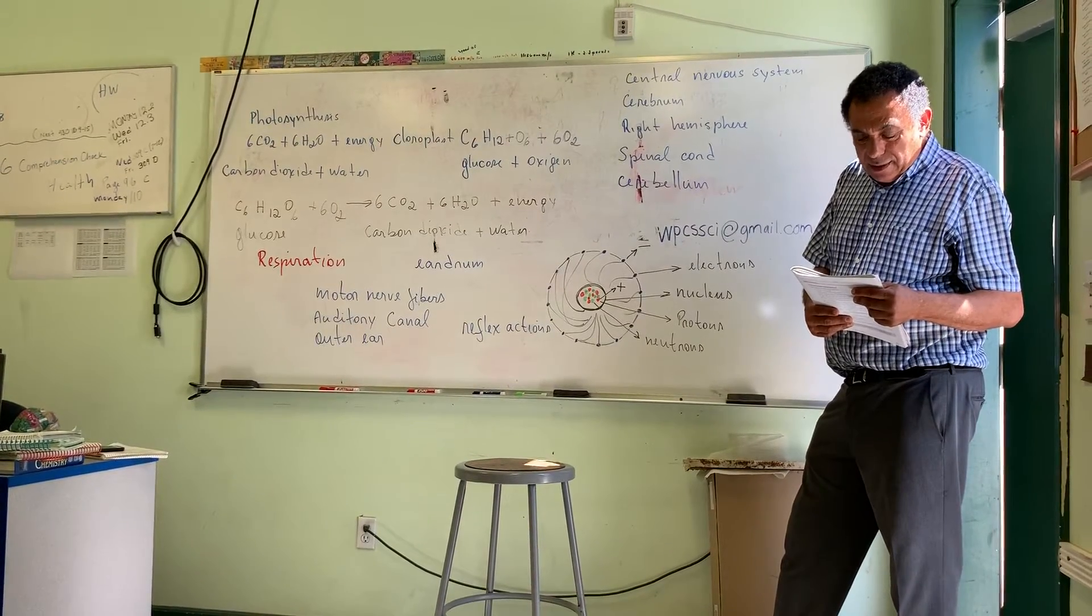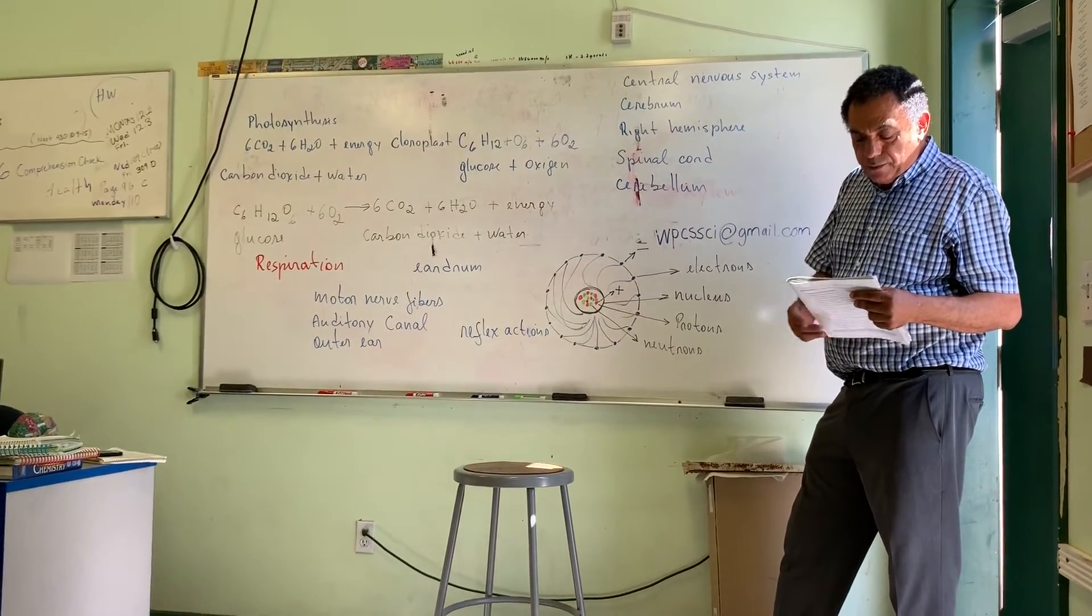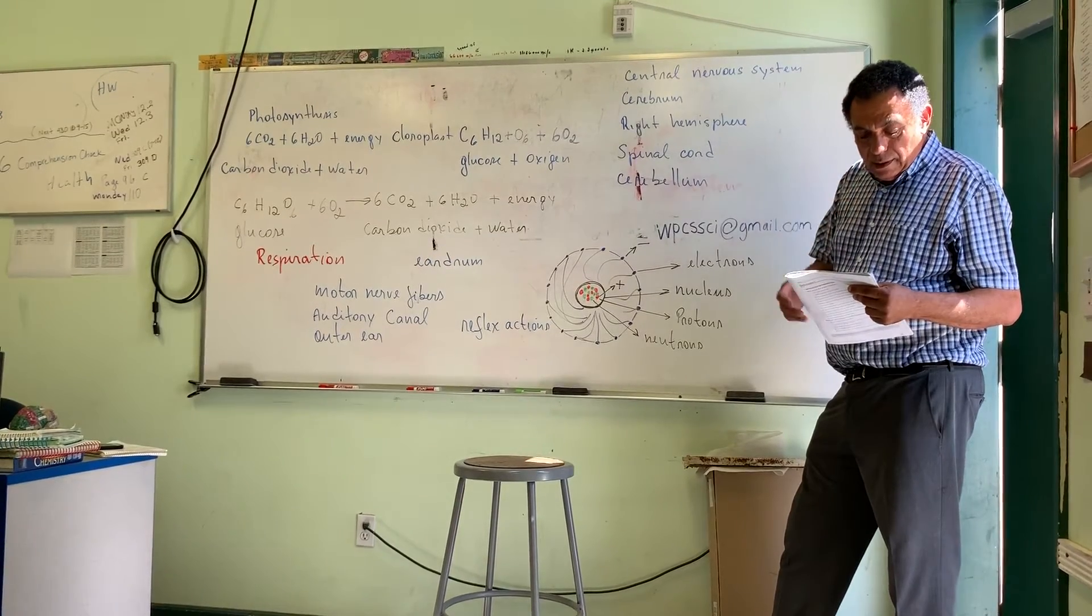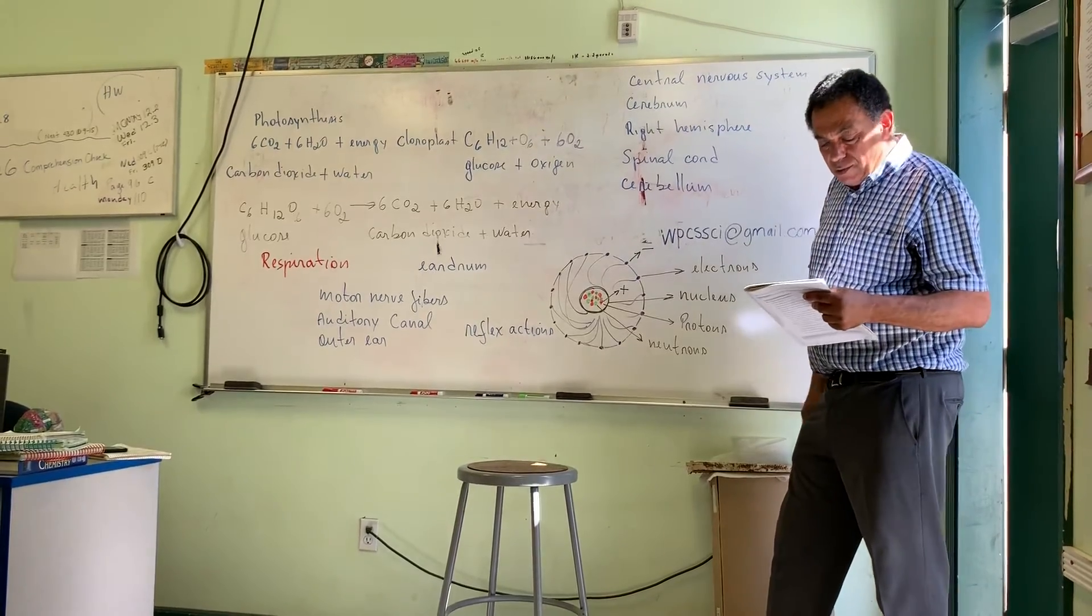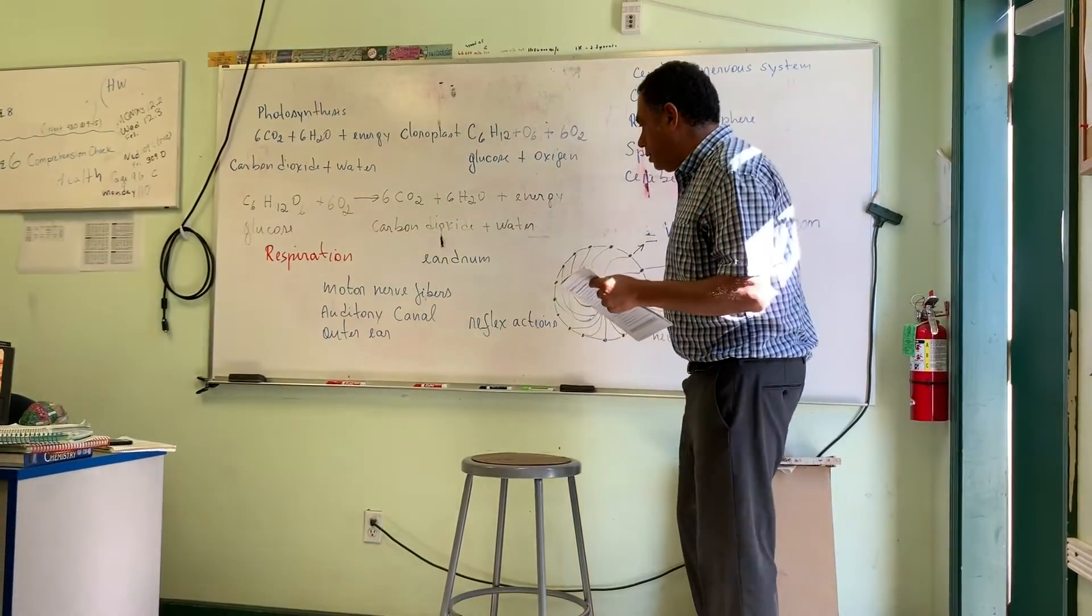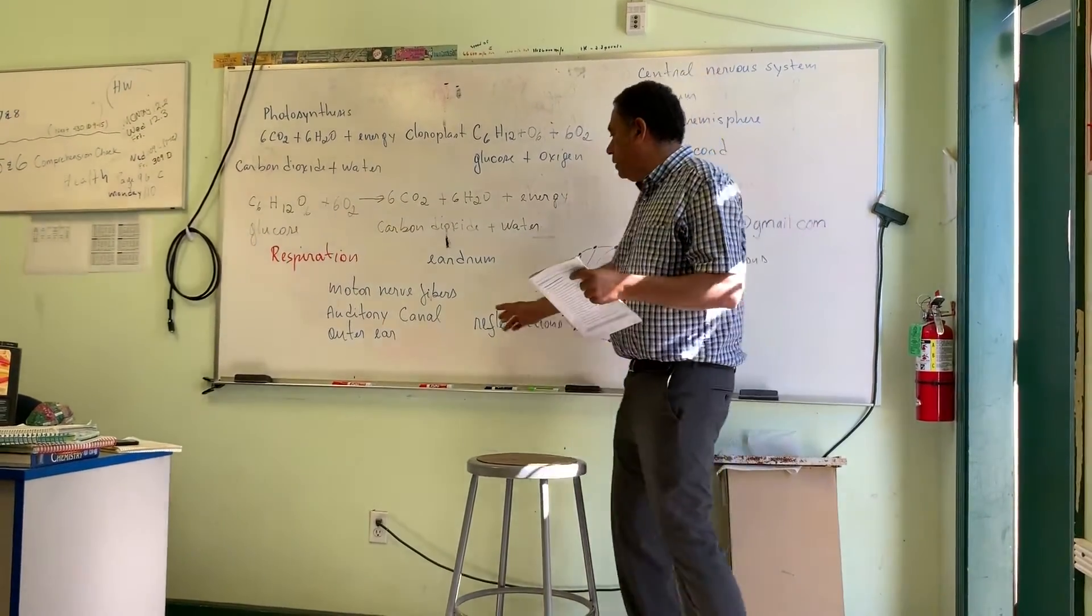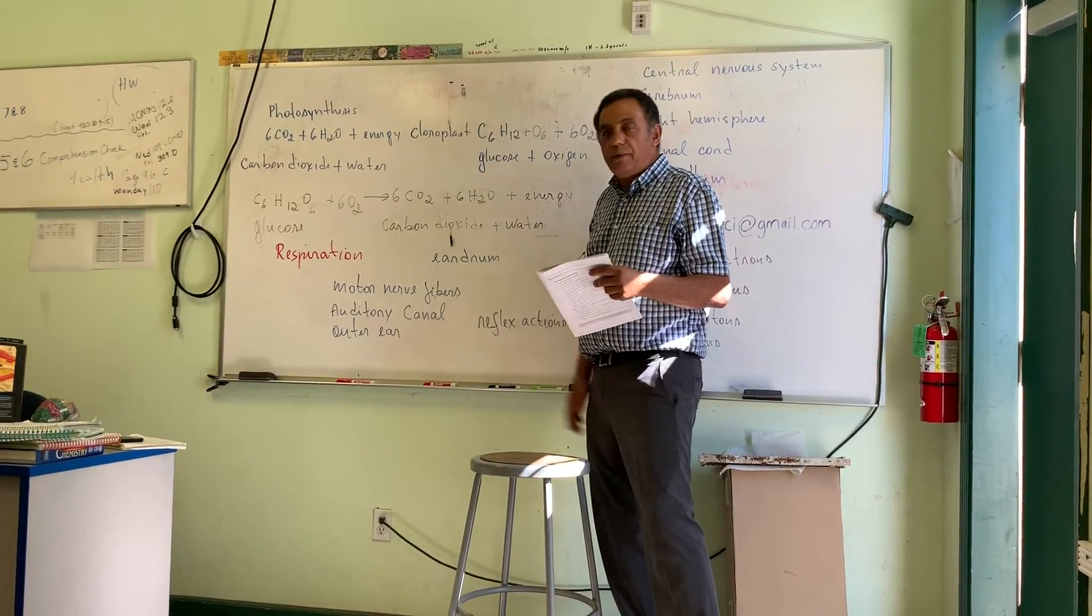The fibers that send order for action from the brain. So the fibers that send order for actions from the brain. Is what? Motor nerve fibers. Motor nerve fibers.